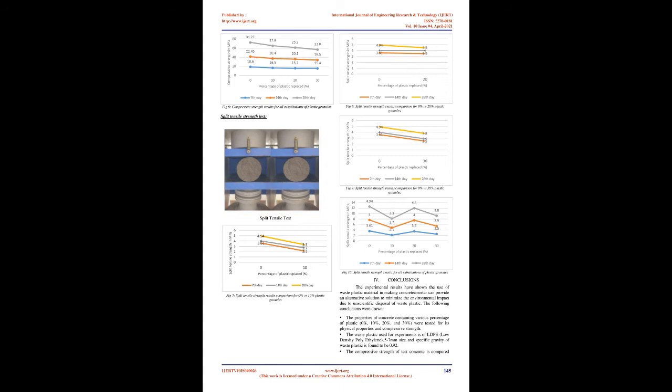7. Admixture: Superplasticizer Conplost SP-430 is used for casting of concrete samples. It is made of sulfonated naphthalene polymer, specified as per IS-9103-979, that achieves in reducing the water content by 20%. 8. Water: Normal tap water is utilized in the present work in the preparation of concrete specimens.